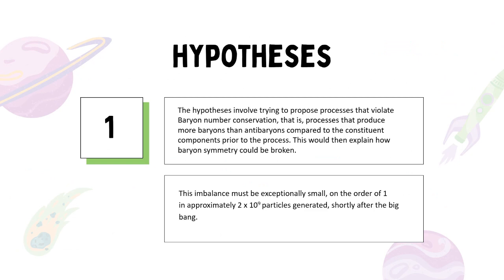This imbalance must be exceptionally small, however, on the order of one in approximately two times ten to the ninth power particles generated shortly after the Big Bang. The majority of the particle-antiparticle pairs would then annihilate, leaving the remaining particles, due to the imbalance, to make up the matter and the small quantities of antimatter that we observe in the universe today.